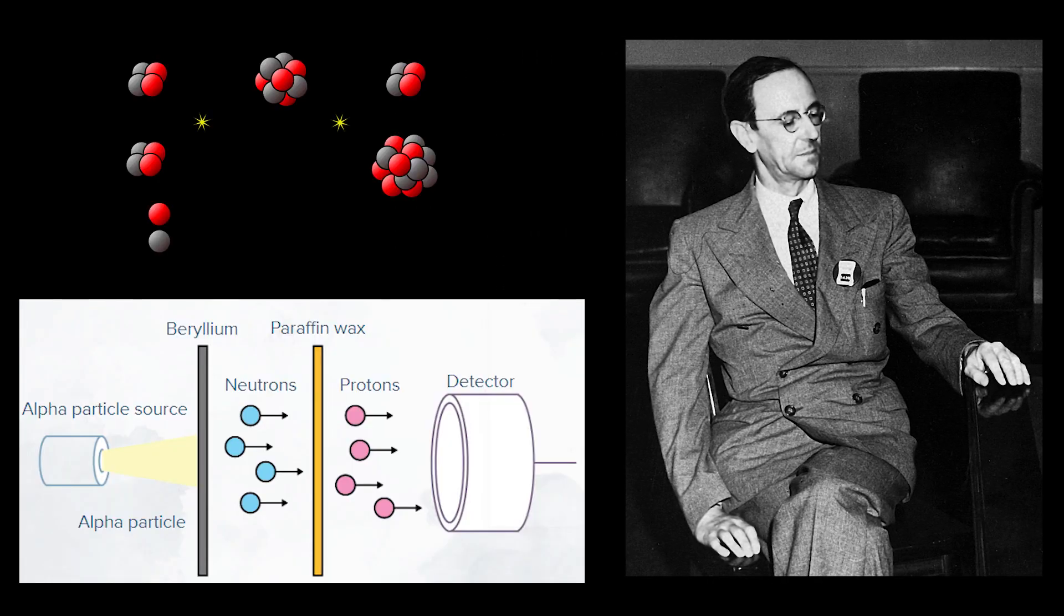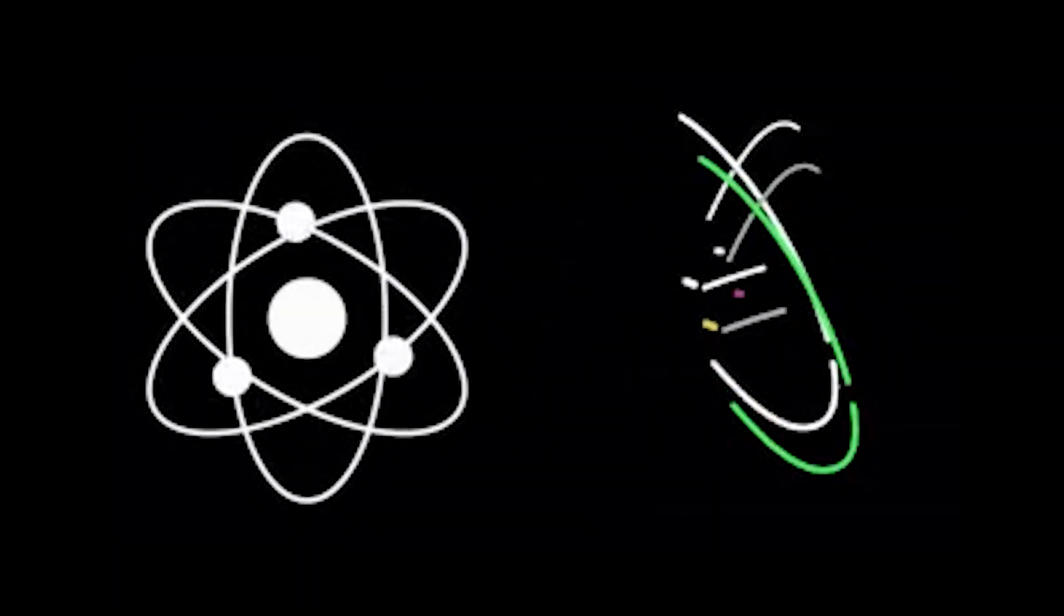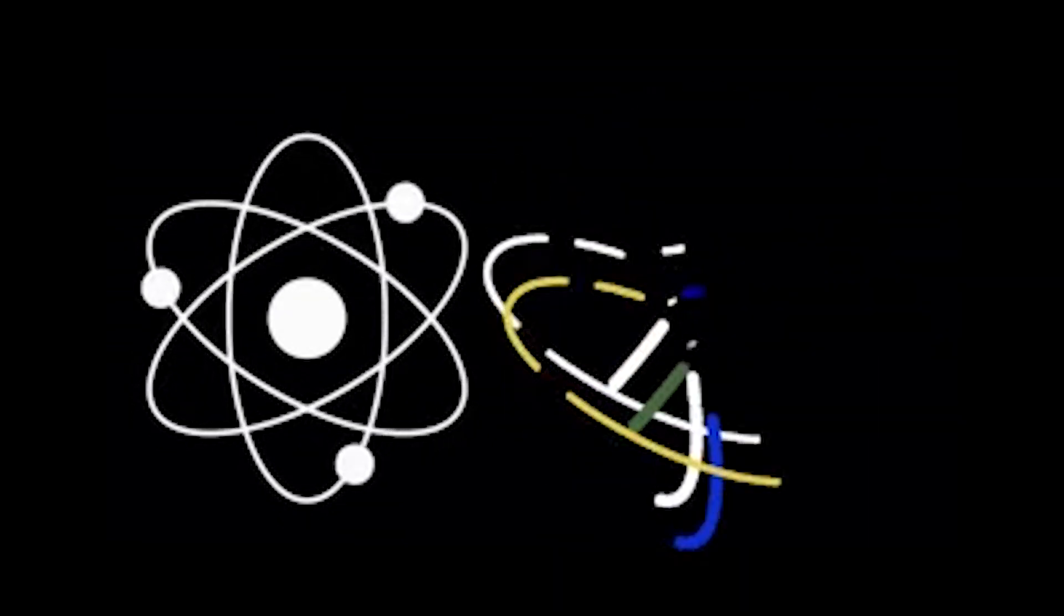But in 1932, James Chadwick performed the experiment of alpha particles directed at a beryllium sheet. James Chadwick discovered the neutron, which had been predicted by Rutherford to exist in the nucleus, and completed the picture of atomic structure.